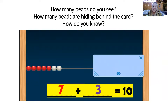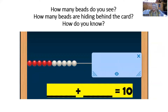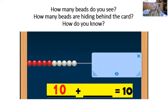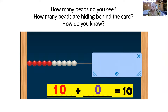Let's do another one. How many beads do you see this time? Did you count it that quickly? I love it. There are 10 beads showing. That's right. And if there are 10 beads showing, how many beads are hiding behind the card? Yes, zero. Ten beads showing, zero beads are hiding. Let's read that equation together: 10 plus zero equals 10.